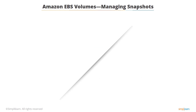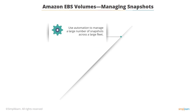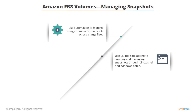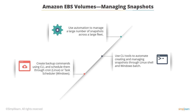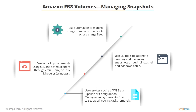Keep in mind the following points to help you better manage snapshots. Use automation to manage a large number of snapshots across a large fleet. Use CLI tools to automate creating and managing snapshots through Linux shell and Windows batch. Create backup commands using CLI and schedule them through cron for Linux or task scheduler for Windows. You can also use services such as AWS Data Pipeline or configuration management systems like Chef to set up scheduling tasks remotely.